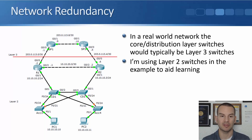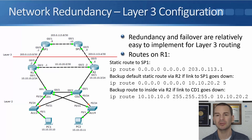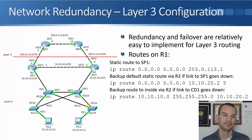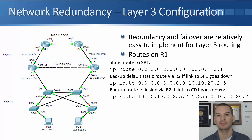So in this example, how are we going to configure connectivity from our WAN edge routers going upstream and also down to our PCs? Redundancy and failover are relatively easy to implement for layer three routing. Looking at the routes on R1, it has a direct connection to SP1, so we'll have a default static route pointing upstream there: IP route 0.0.0.0 0.0.0.0 with the next hop address of the SP1 router at 203.0.113.1.